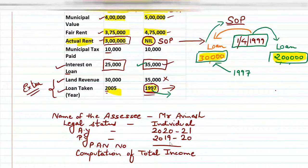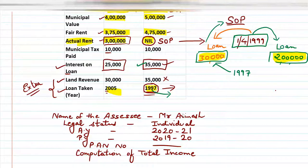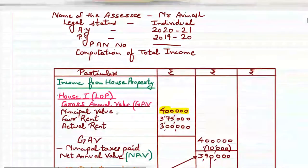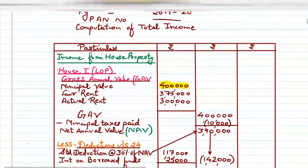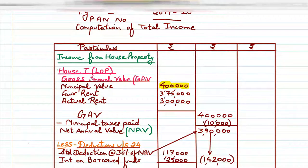The format will always be similar in every question — we just write the name of the assessee. Income from house property: first we will solve house number one. The LOP format is quite important, as we discussed in the last lecture. So here with the amounts — LOP, house number one.